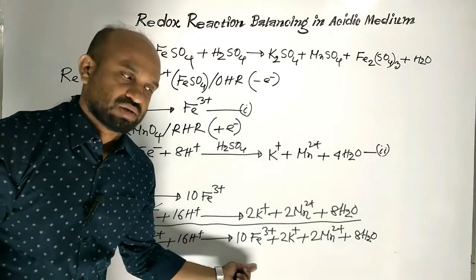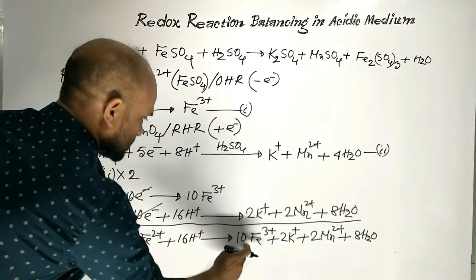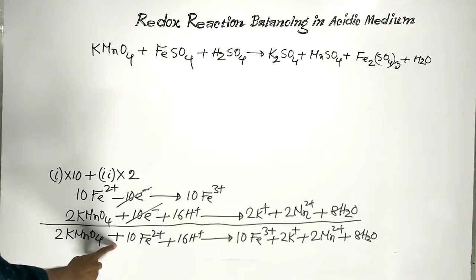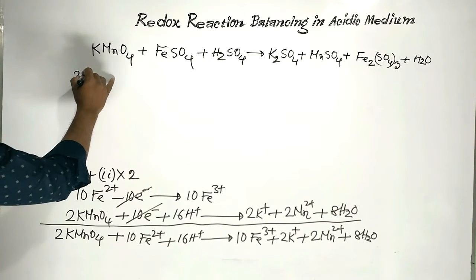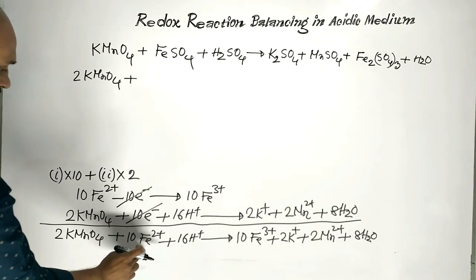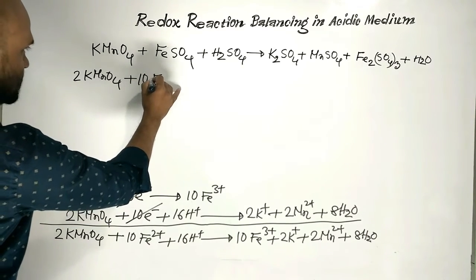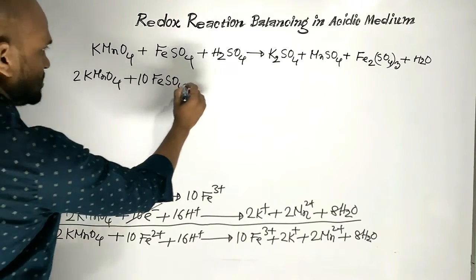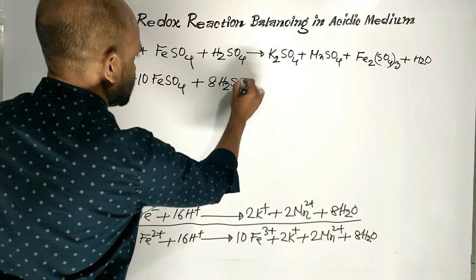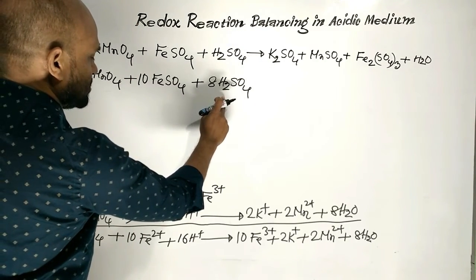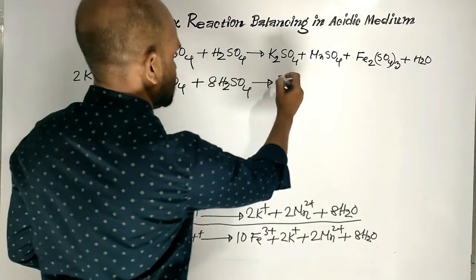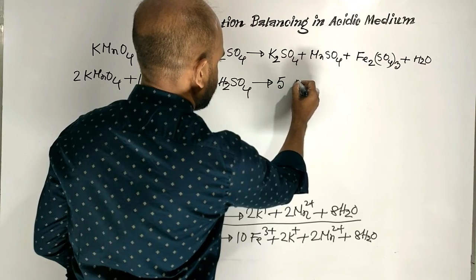Now, in this equation, necessary spectator ions are provided to get the balanced reaction. Providing the necessary ions, we get: 2 Potassium permanganate plus 10 Ferrous Ions — that is, 10 Ferrous Sulphate — plus 16 protons, meaning 8 molecules of Sulphuric Acid. 8 molecules of Sulphuric Acid provides 16 protons. On the right side, 10 Ferric Ions — meaning we can write 5 molecules of Ferric Sulphate.